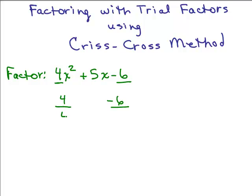Other factors for 4: try 4 and 1 — that multiplies out to be 4. For negative 6, I could try 6 and 1. I can't put the 6 next to the 4 because I'd have a common factor, but I could put 1 and 6. It has to multiply out to be negative 6, so I have to put the minus sign in front of one of these numbers. Now we're going to do the crisscross: multiply those together and add it to whatever these multiply together. So 4 times 6 is 24, and 1 times negative 1 is negative 1. And 24 minus 1 is 23, but what you're trying to get is the middle term, which is 5.